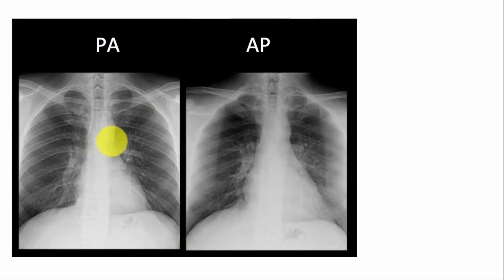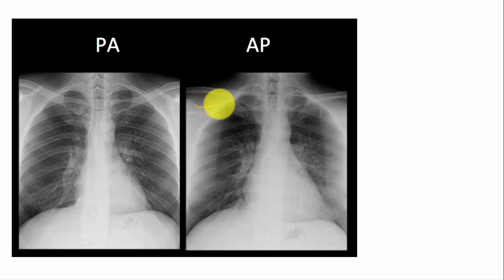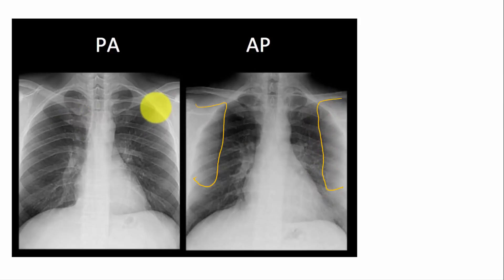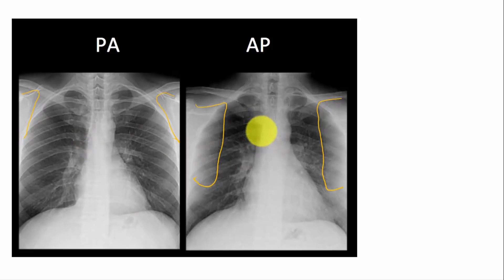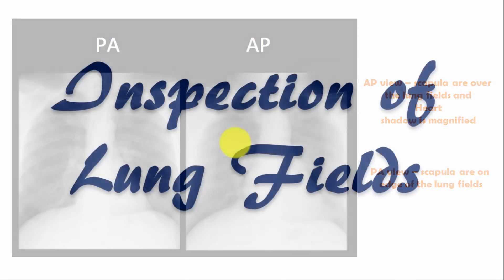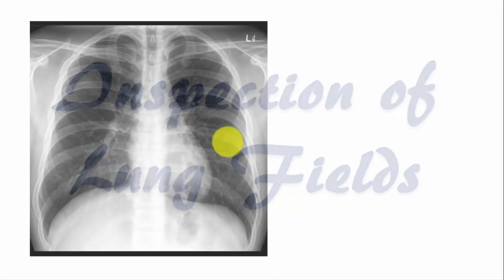In the AP view, since the shoulders are not rotated anteriorly, you will clearly be able to see the blades of the scapula and their borders inside the thoracic cavity. In the PA view, because the shoulders are rotated anteriorly, you will not see the scapular borders. Also, the shadow of the heart in the AP view will be slightly magnified as compared to the PA view.